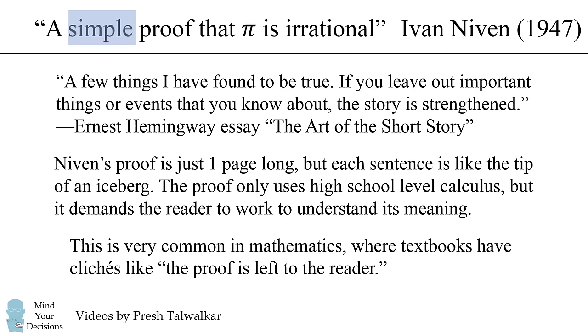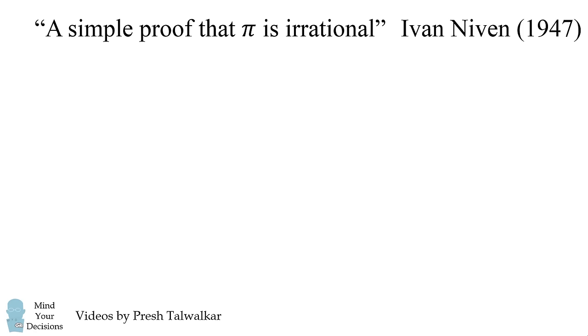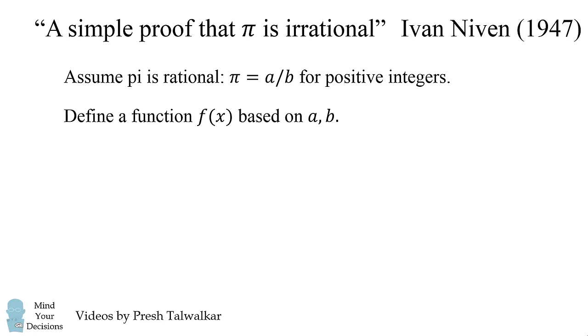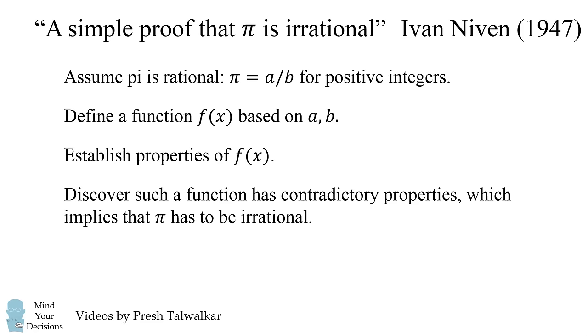So now let's try and tackle this proof. Here's a very high level outline of what the proof entails. It's a proof by contradiction. First we assume that pi is rational. We then define a function based on the fraction that pi would be. We then establish properties of the function. And eventually we discover such a function has contradictory properties, which then implies pi has to be irrational.